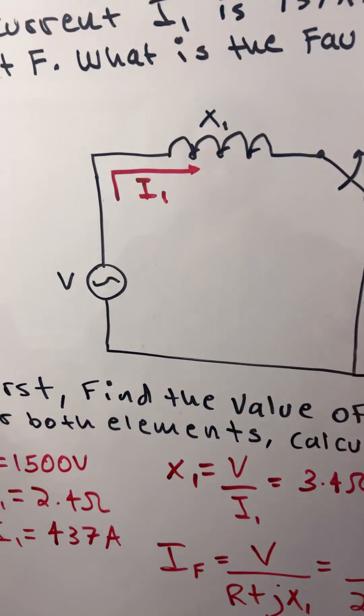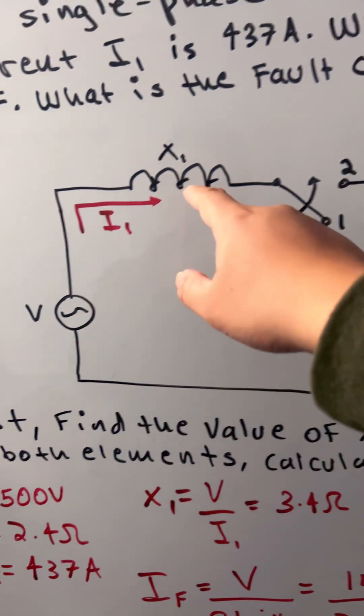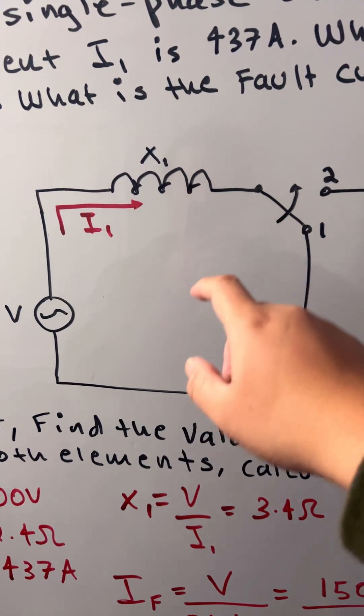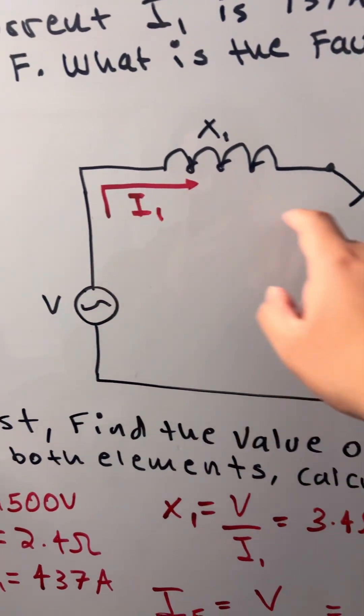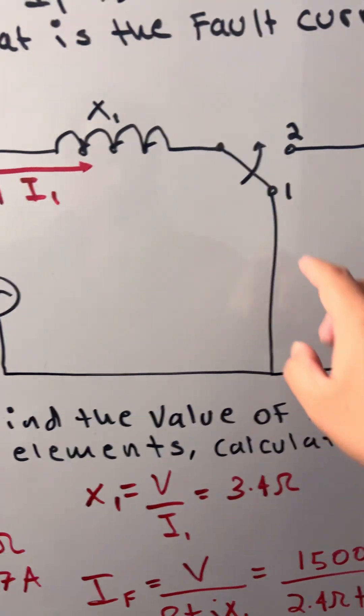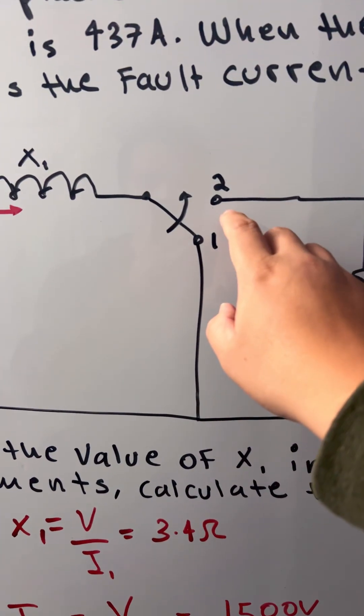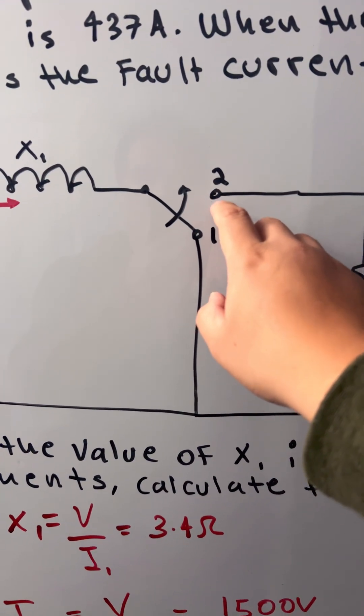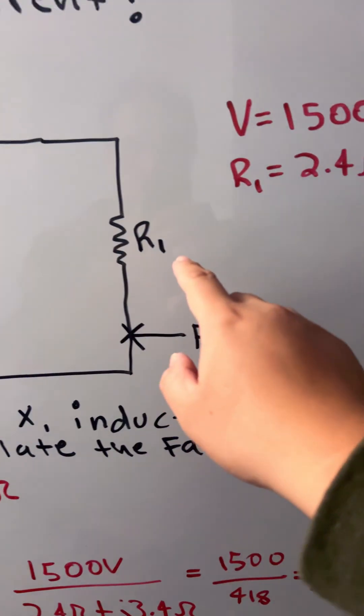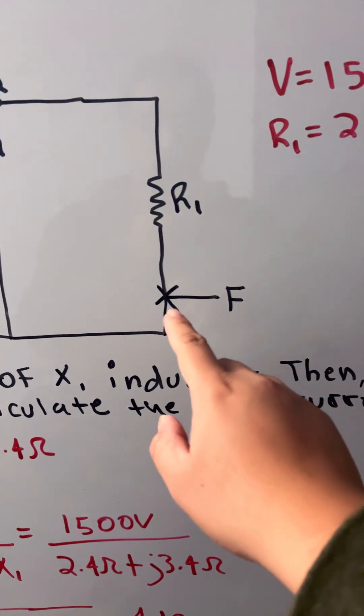So here's our circuit. Here's the voltage source, here's the inductance X1, here's the current flowing, here's the switch 1 and this is position 2, position 1, here's the resistance and here's the fault.